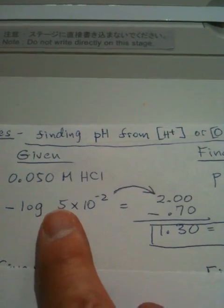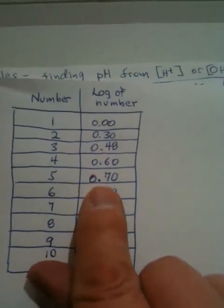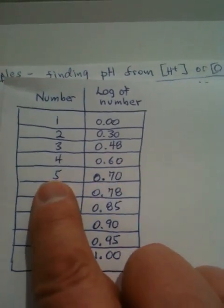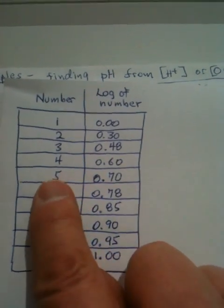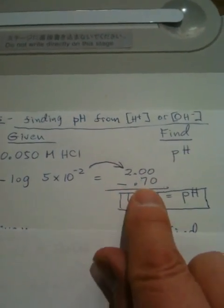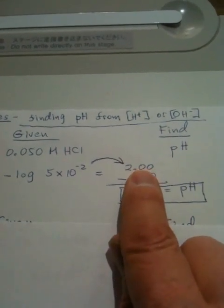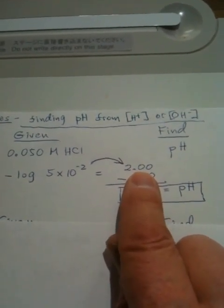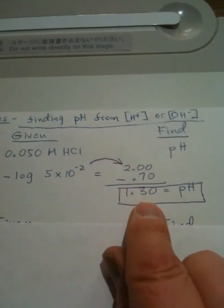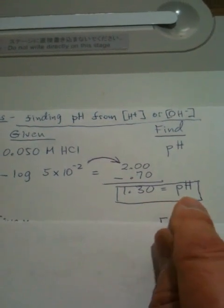Then we take 5, and we find 5 on our little chart. 5 is, can you see here, we've got 0.70. That's the value of the logarithm of the number 5. Let's go back over here now, and we see that the 0.70 is put in here as a minus number to be subtracted from the power of 10 changed into a regular number. And the number that we wind up with, 1.30, becomes our pH.